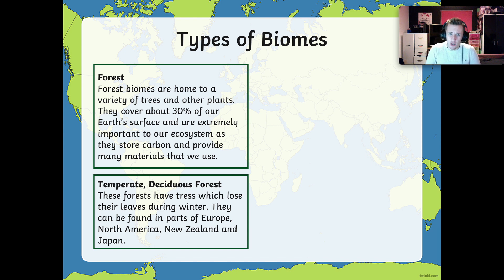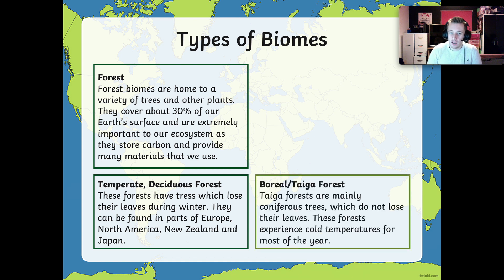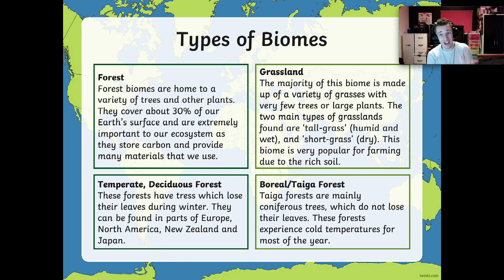There's a subcategory here. You have what's called a temperate deciduous forest — these forests have trees which lose their leaves during the winter. Deciduous means to lose leaves. They can be found in parts of Europe, North America, New Zealand, and Japan. Not all forests lose their leaves during the winter — like evergreen trees, they've always got leaves on them. Then there's a boreal, or taiga, forest — mainly coniferous trees which do not lose their leaves. These forests experience cold temperatures for most of the year. For your notes, you can just put 'forest' and note that there are different types, listing their titles underneath.